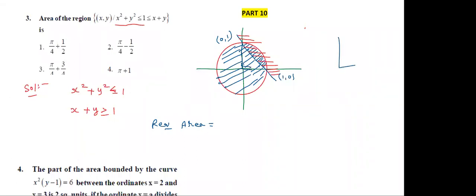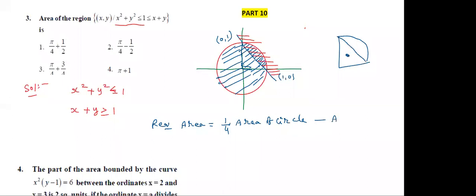Take one part — this part. Now the required area equals 4 × (1/4) × area of circle. Area of circle minus — which part do we want to eliminate? That is the area of triangle OAB.